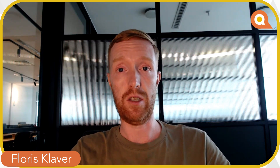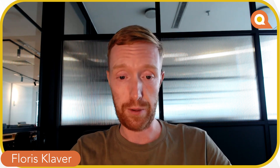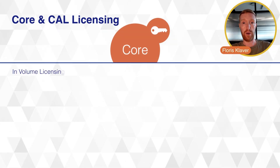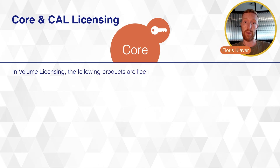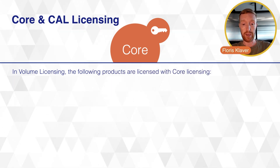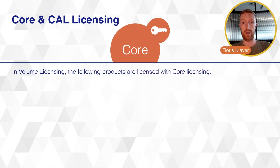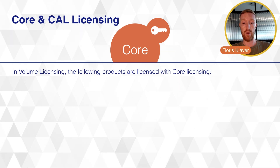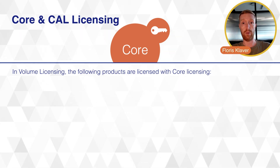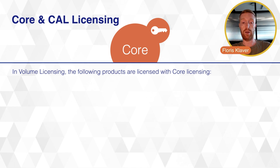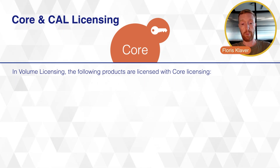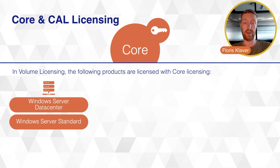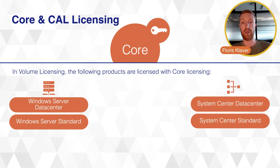If you're already familiar with our product licensing sessions, you already know that the client access license is very important across many different Microsoft products. Looking at the core part of Core and CAL licensing, this means you need to license the servers you have with the proper amount of cores, and you have to do this for all kinds of different products — but mainly Windows Server Datacenter and Standard, and System Center Datacenter and Standard.